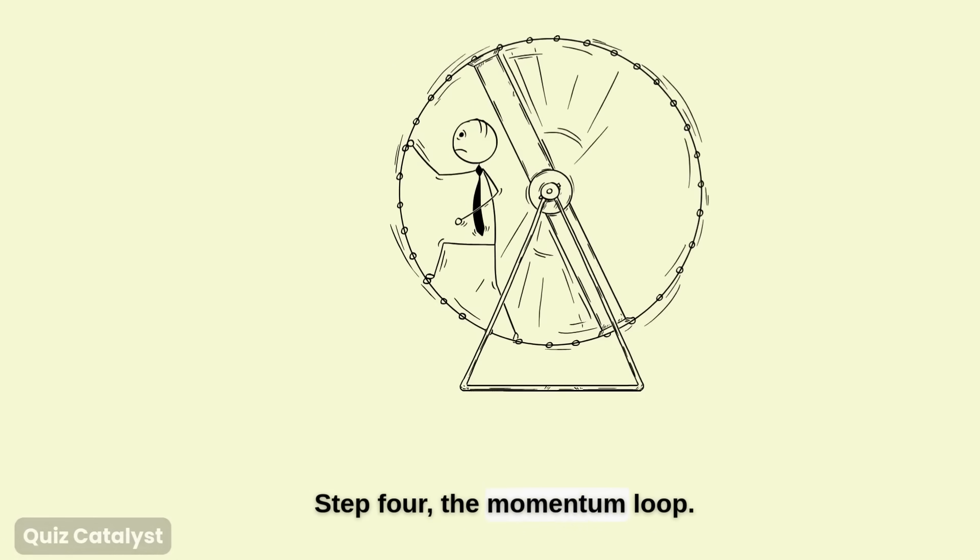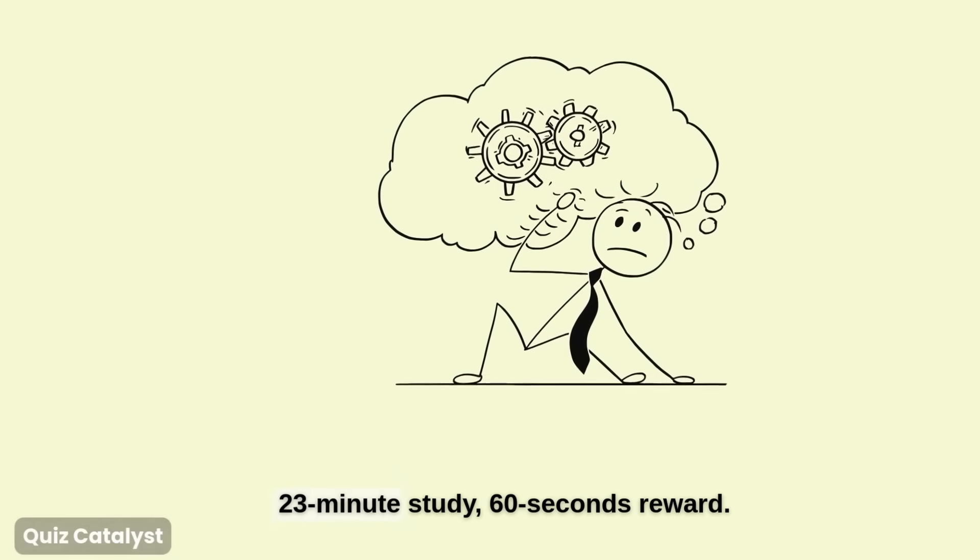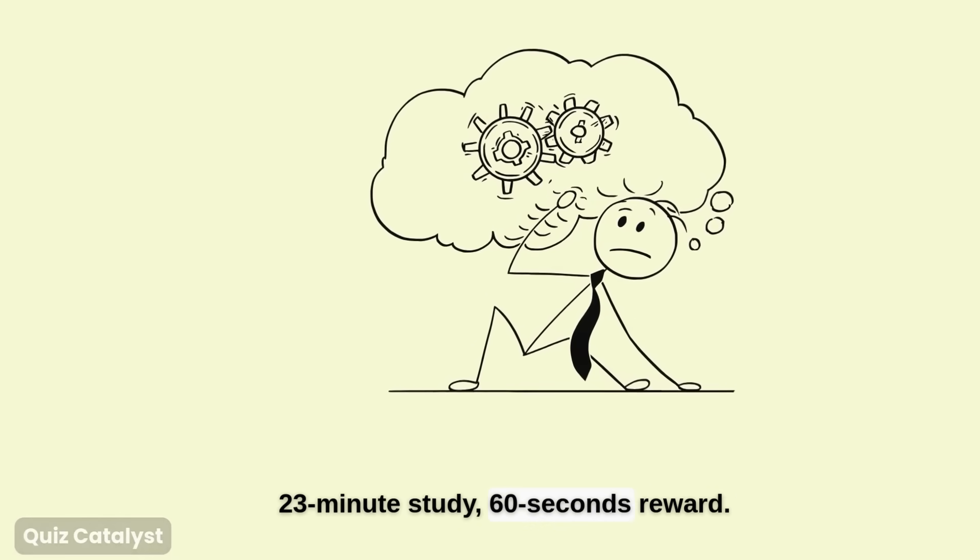Step four, the momentum loop. This is how you lock the addiction in. Use this cycle. 23-minute study. 60 seconds reward.